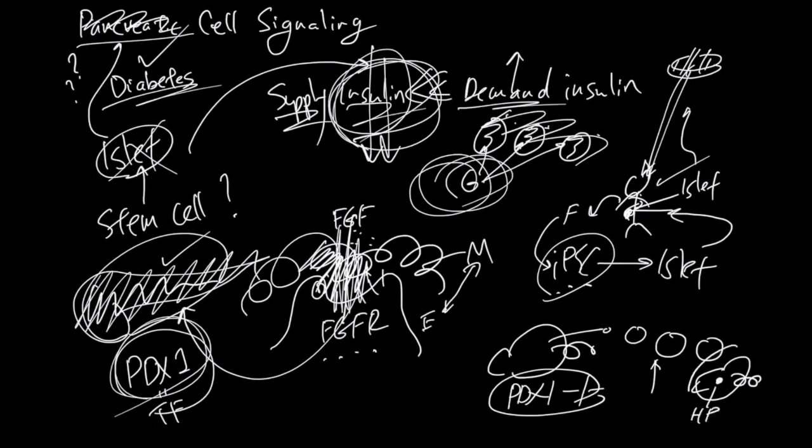Basically, you turn this mouse into a human pancreas host. This human pancreas will make some islet cells, and you can take out these islet cells and put them back into the patient. This is still experimental, but in theory, this should work. People have done this with rat pancreas grown in mice and put these grown islet cells back into the rat to rescue the insulin-making process.